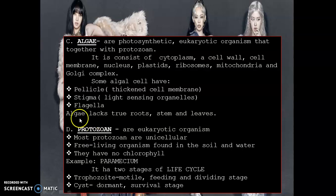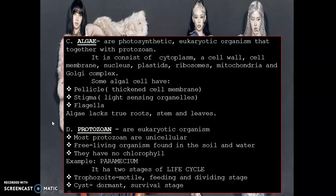Next we have protozoa. Protozoa are eukaryotic organisms, as mentioned alongside algae. Most protozoa are unicellular — single-celled, free-living organisms found in soil and water. They have no chlorophyll. One example is Paramecium. Protozoa have two stages of a life cycle: the trophozoite, which is the motile feeding and dividing stage, and the cyst, which is the dormant or survival stage.